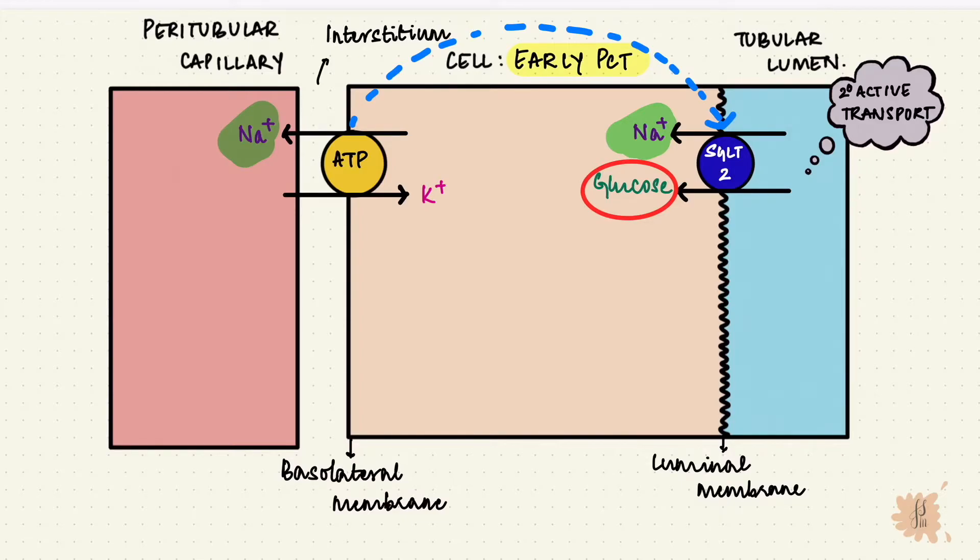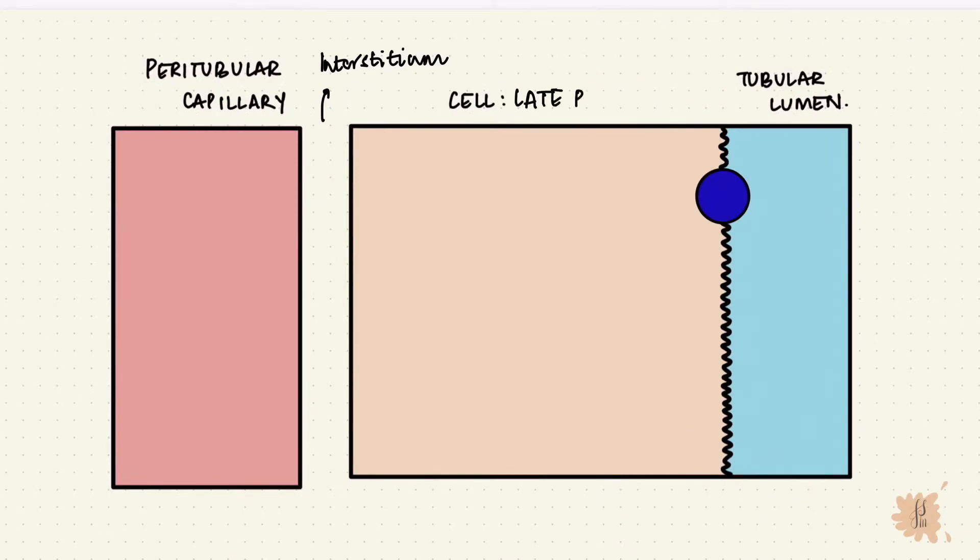Almost all the glucose and amino acids get reabsorbed here. So by the time we reach the late PCT, there isn't enough to go with sodium. But the negative ion that usually moves with sodium, that's chloride, gets concentrated in the lumen, and in the later part of the PCT, sodium gets reabsorbed with chloride.